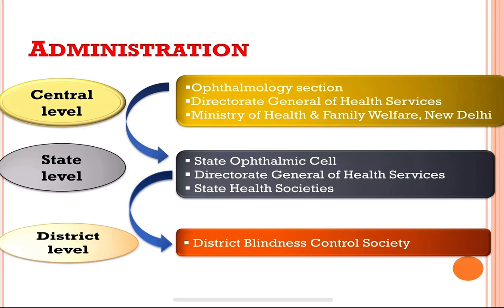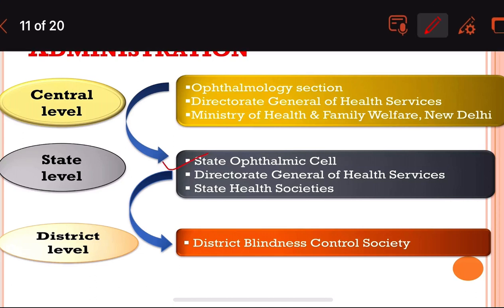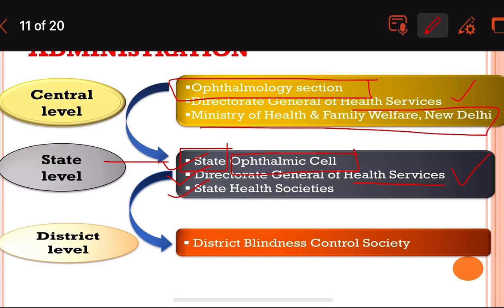At the state level, we have the state ophthalmic cell, the Directorate General of Health Services, and state health societies.